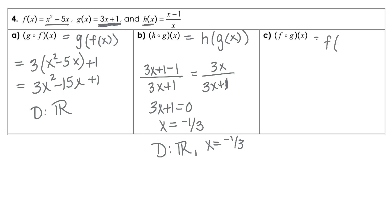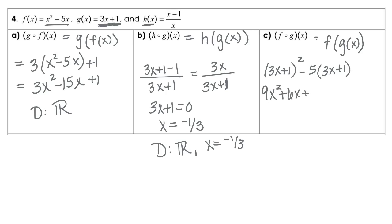For part c, that notation means f of g of x, so I'm plugging g of x into f of x. That's going to give us 3x plus 1, all squared, minus 5 times 3x plus 1. Expanding the first term gives us 9x squared plus 6x plus 1, and then we have minus 15x minus 5. Combining like terms: 9x squared, and 6x minus 15x is negative 9x, and 1 minus 5 is negative 4. This is a polynomial, so the domain is all real numbers.